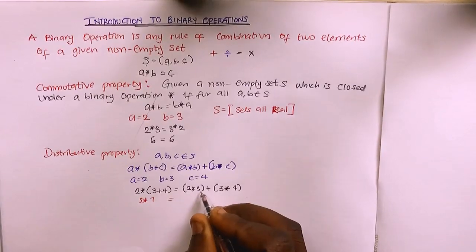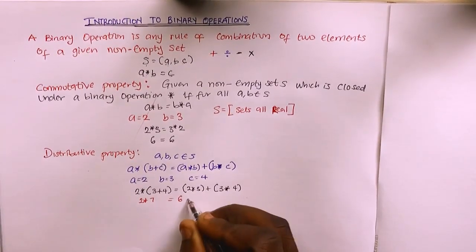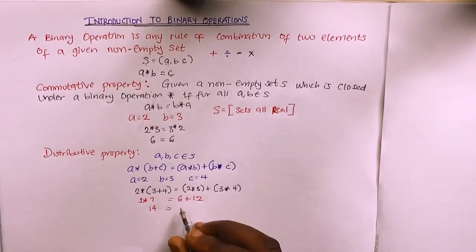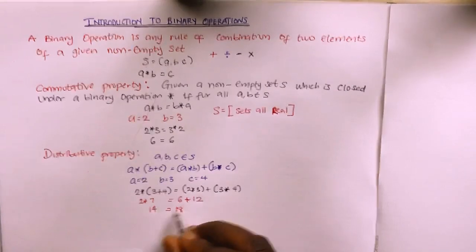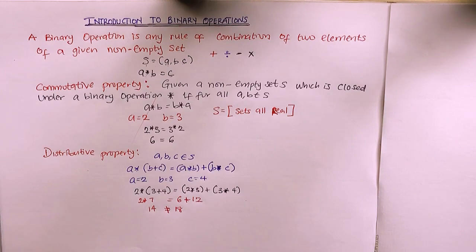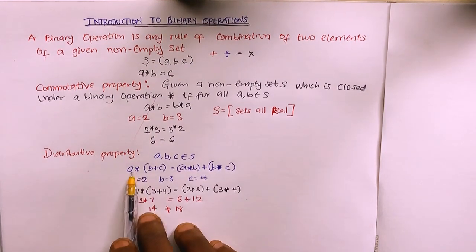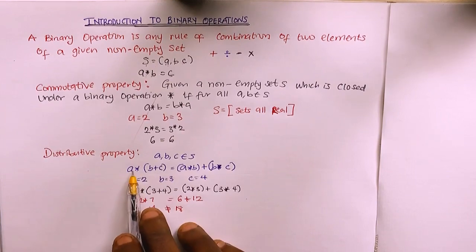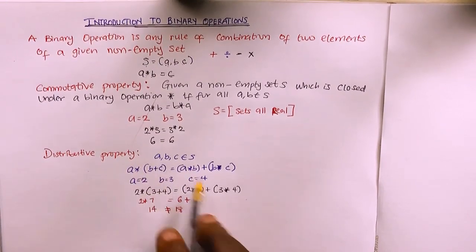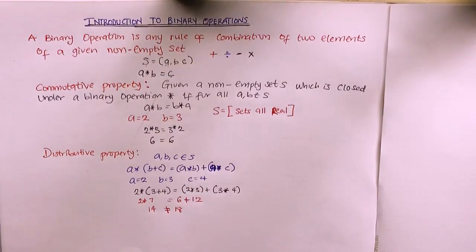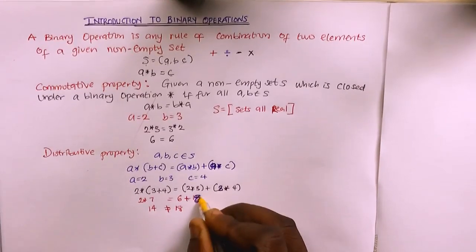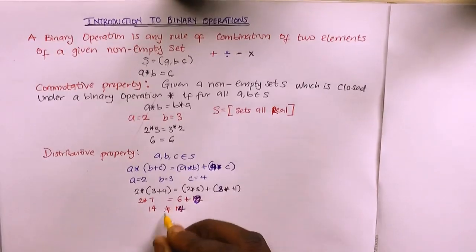We have 2 star 7 on the left. On the right, 2 star 3 is 6 and 2 star 4 is 8. Wait, let me correct — the right side should be a star b plus a star c, meaning 2 star 3 plus 2 star 4, which is 6 plus 8 equals 14. And 2 star 7 is also 14. So the operation is distributive.